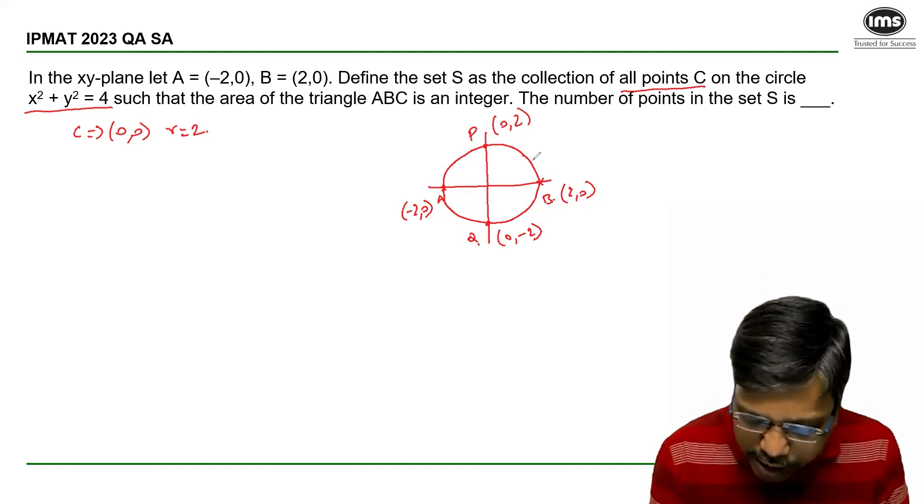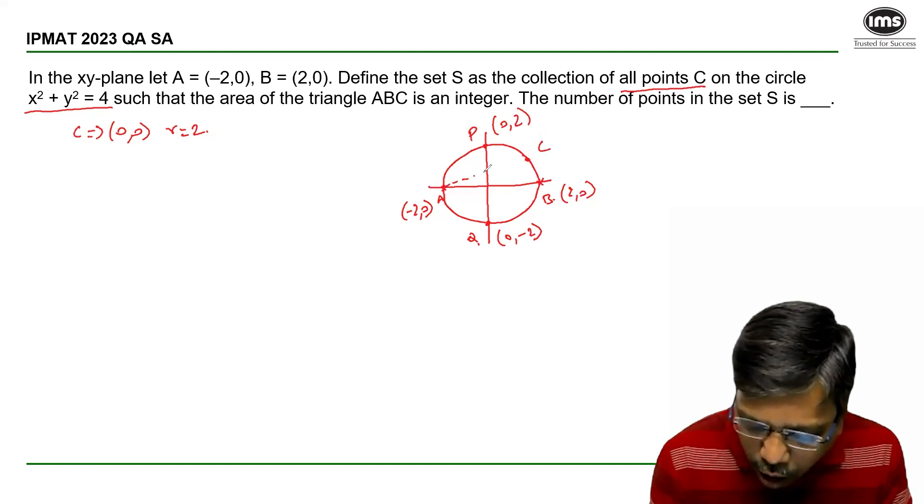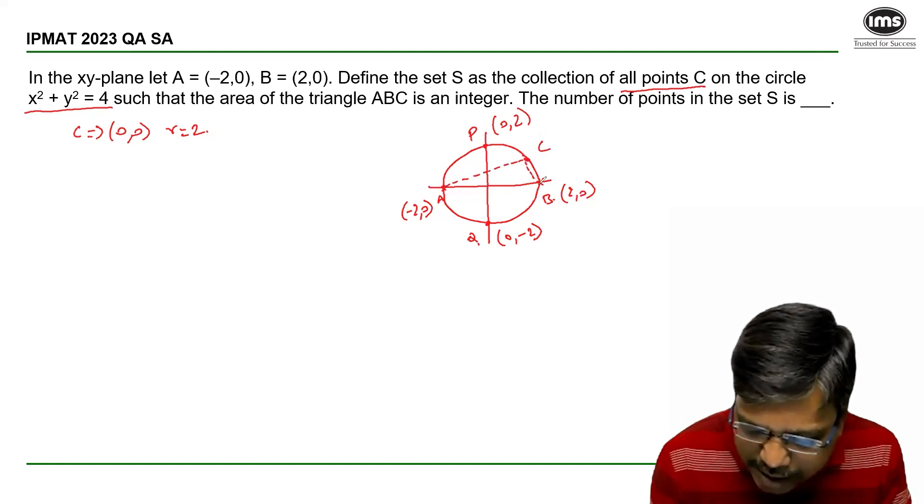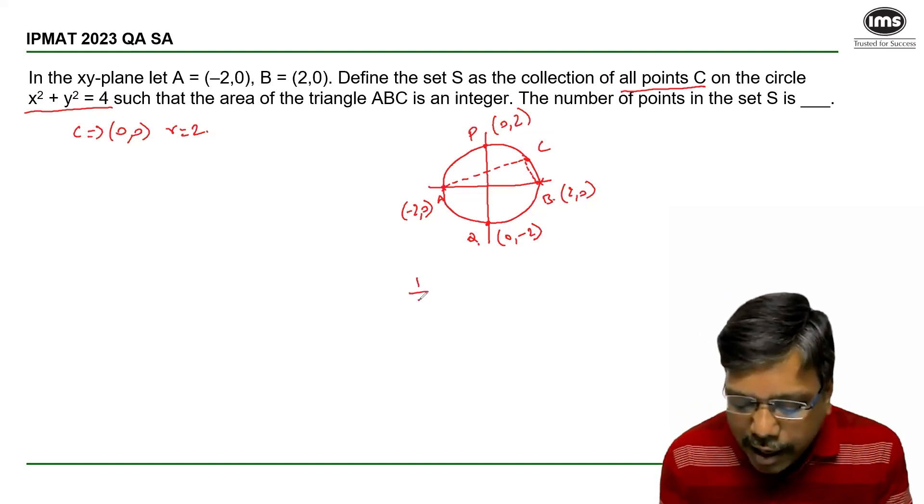Now suppose this is a point C. And I want the area of triangle A, B, C to be an integer. Now how do I calculate the area? Half into base into height.